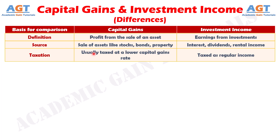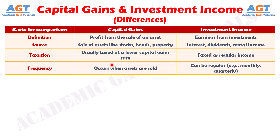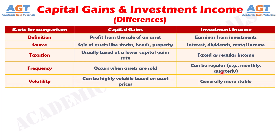Number three: capital gains are usually taxed at a lower capital gains rate, whereas investment income is taxed as regular income. Number four: capital gains occur when assets are sold, whereas investment income can be received regularly, such as monthly or quarterly. Number five: capital gains can be highly volatile based on asset prices, whereas investment income is generally more stable.